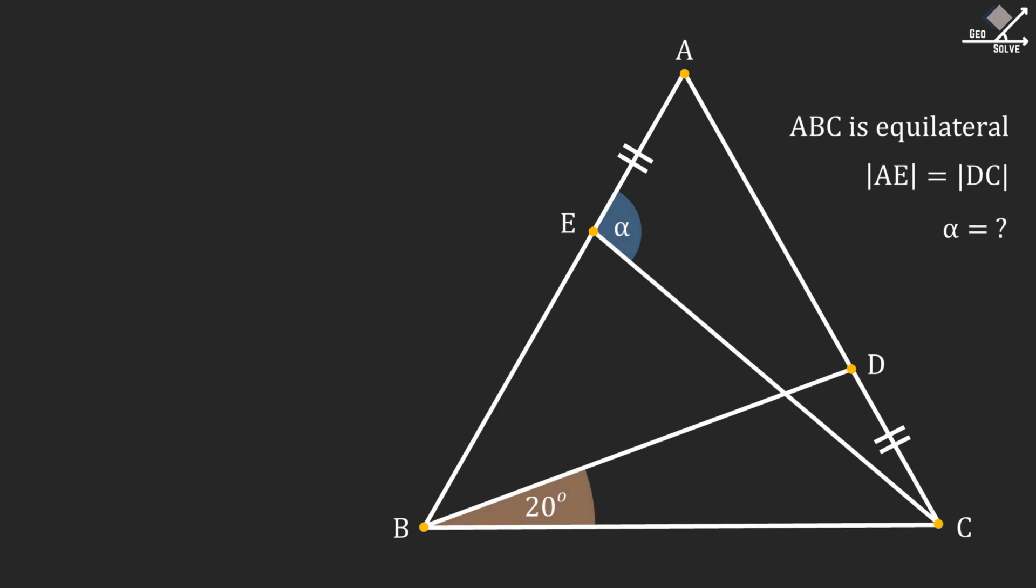I'll present two different solution methods. Let's start with solution method 1. First, let's call equal line segments AE and DC as A.